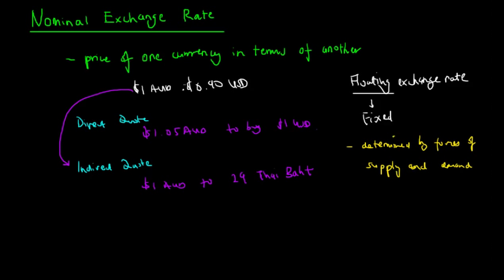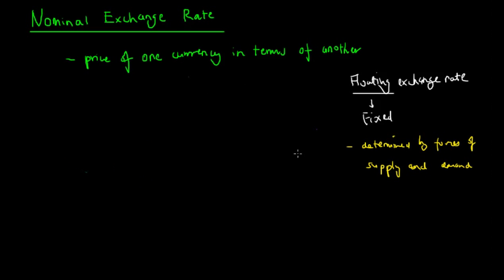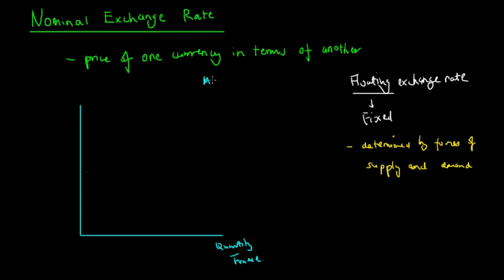We are going to look at how supply and demand can actually affect the exchange rate. Like any supply and demand curve, we have quantity on the x-axis — in this case, the quantity traded — and we'll look at the market for the Australian dollar. The price on the y-axis is simply the exchange rate.